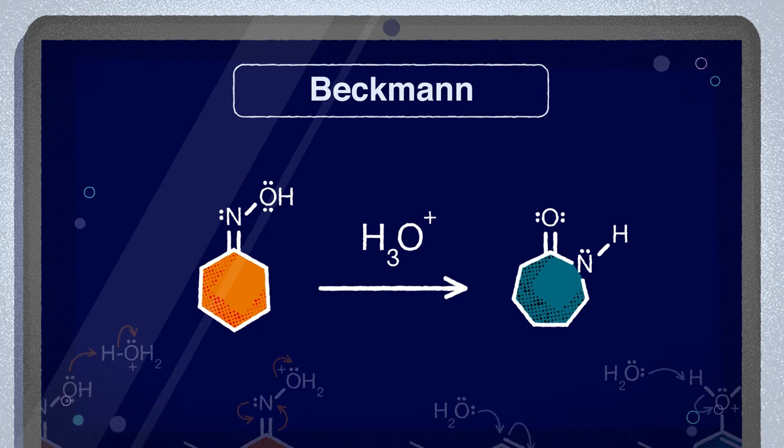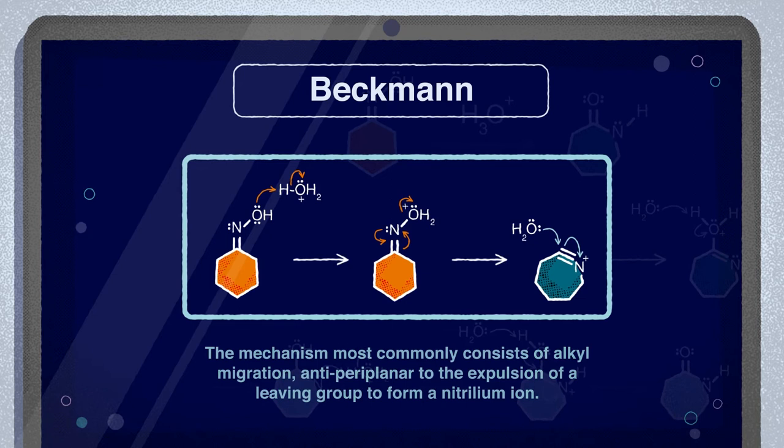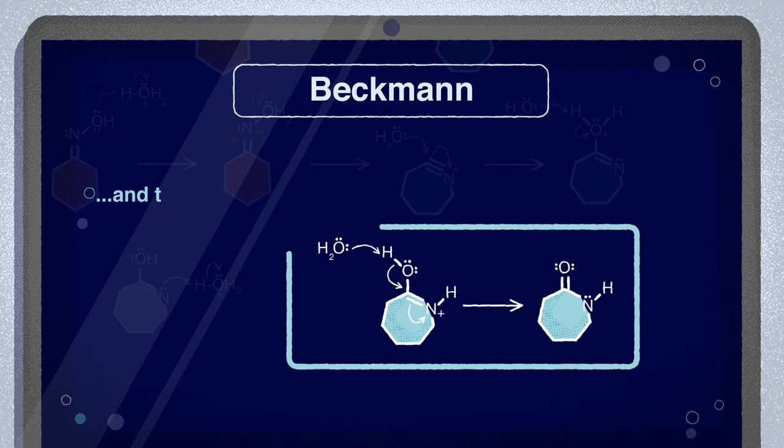The mechanism most commonly consists of alkyl migration anti-periplanar to the expulsion of a leaving group to form a nitrilium ion. This is followed by solvolysis to an imidate and then tautomerization to the amide.